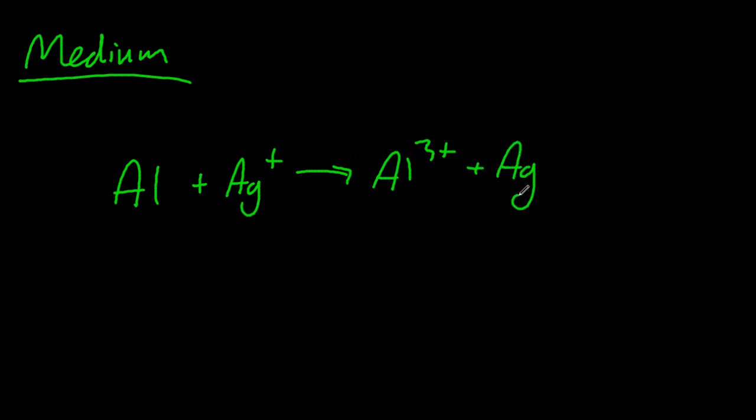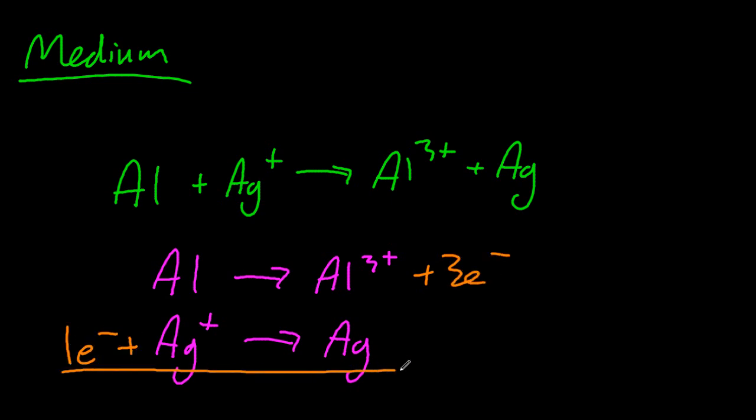Okay, so let's split this into two half equations. Obviously the aluminium sticks with itself, and the silver sticks with itself. Now you've got to add some electrons to balance the charge. Aluminium's neutral on the left, and now it's neutral on the right. And the same with the silver.